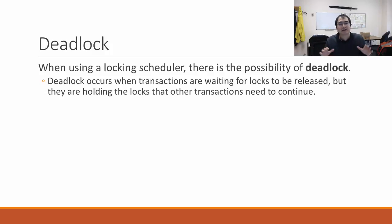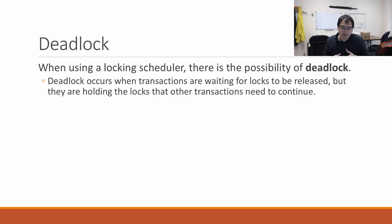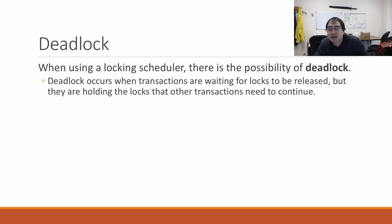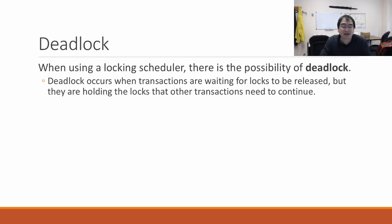Deadlock occurs when a transaction is waiting for locks to be released, but it's holding locks that other transactions need to continue. For instance, transaction 1 needs a lock from transaction 2, but transaction 2 needs a lock from transaction 1. The system will never proceed because neither one will release its locks until it gets the lock the other one is holding. This is called deadlock.